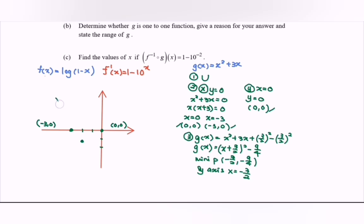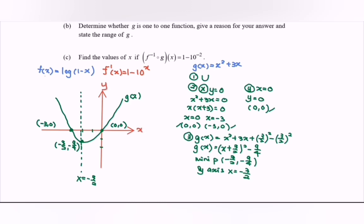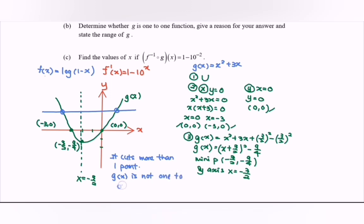Referring to the graph, making use of the horizontal line test, we notice that we have two intersection points — the horizontal line cuts the graph at more than one point. So g(x) is not a one-to-one function.